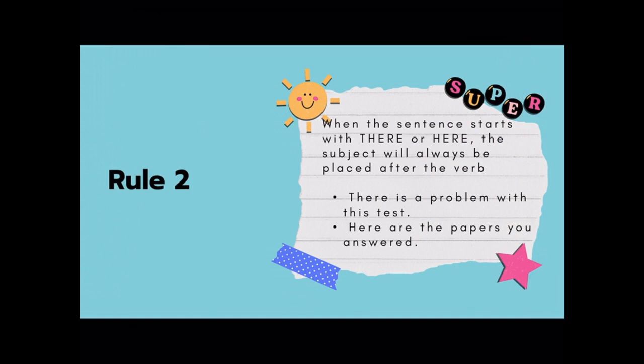Rule number two states that when the sentence starts with there or here, the subject will always be placed after the verb. There is a problem with this test. Is is the verb, and the subject is problem, which is singular. Here are the papers you answered. Are is the verb, and papers is your subject, which are both plural.